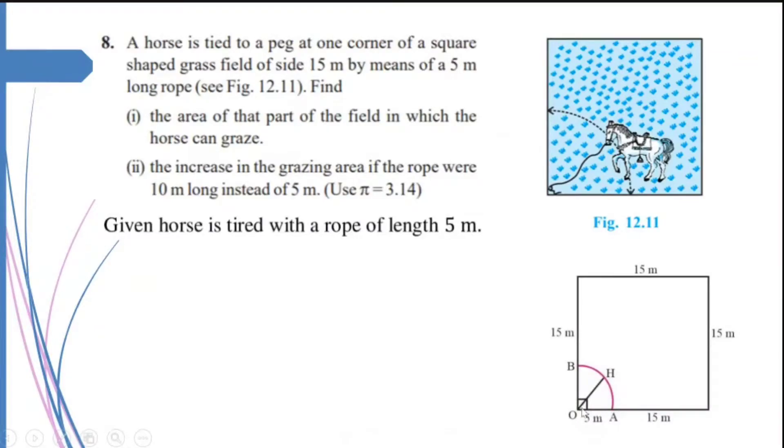So the area of the sector I will be finding out with θ = 90° and r = 5, the length of the rope. Let us do that. The horse can graze a sector of 90 degrees in a circle of radius 5 meters.